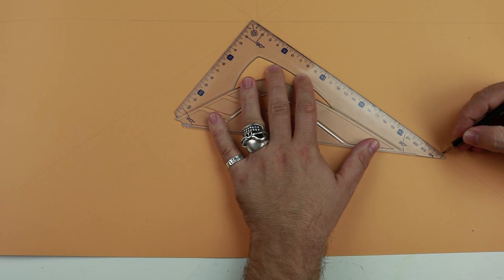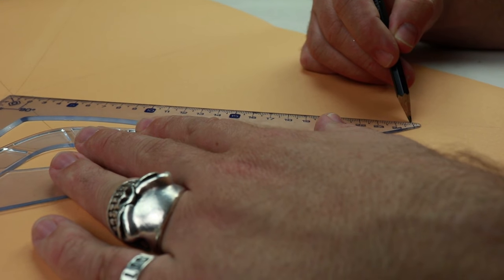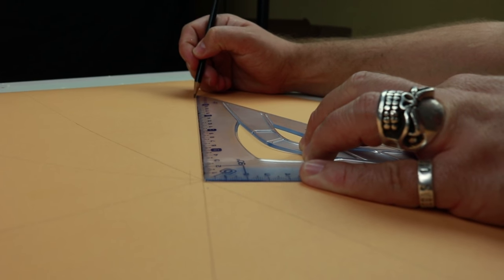If we don't have one, we can measure the same length around the cardboard and connect the dots by hand. The length will depend on the size of your pet.